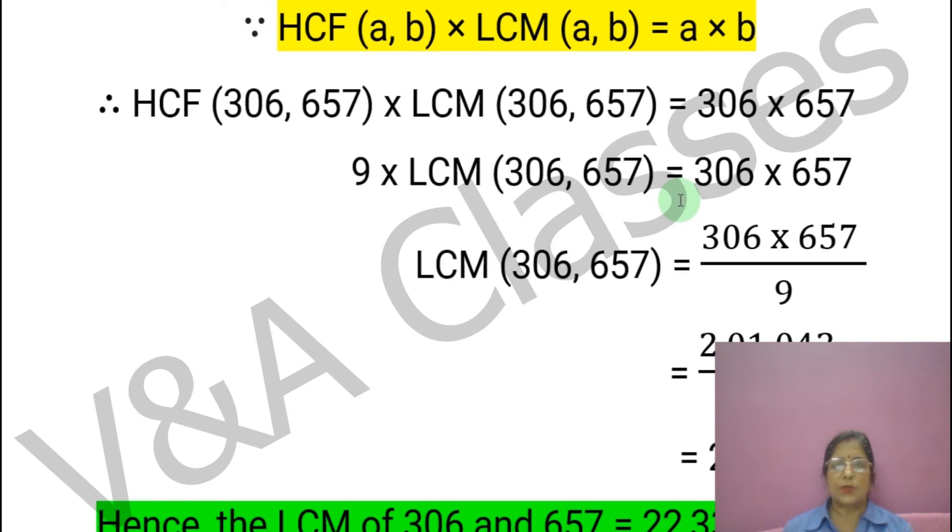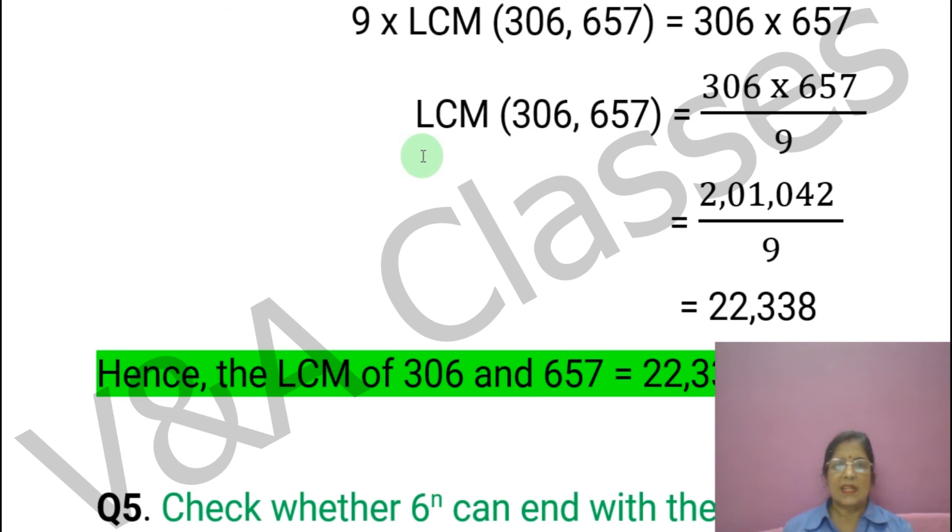Since we need to find the LCM of these two numbers, we will rearrange the formula. LCM of 306 and 657 equals to 306 multiplied by 657 divided by 9. Now when we multiply these two numbers, the value comes to 201,042, and this divided by 9. When we solve this, the value comes to 22,338.